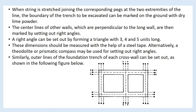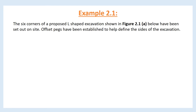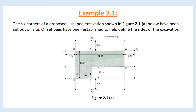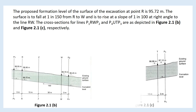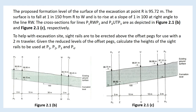Example 2.1: The six corners of a proposed L-shaped excavation have been set out on site. Offset pegs have been established to help define the sides of the excavation. The proposed formation level of the excavation surface at point R is 95.72 m. The surface is to fall at 1 in 150 from R to W, and is to rise at a slope of 1 in 100 at right angles to the line RW. The cross sections for lines P1–R–W–P2 and P4–U–P3 are as depicted in the figures. Site rails are to be erected above the offset pegs for use with a 2-meter traveler. Given the reduced levels of the offset pegs, calculate the heights of the site rails to be used at P1, P2, P3, and P4.